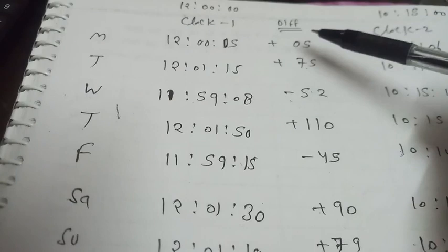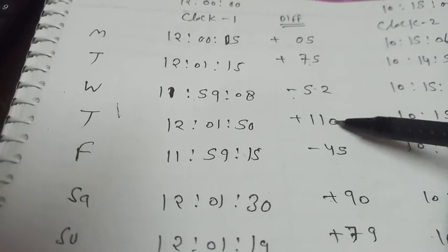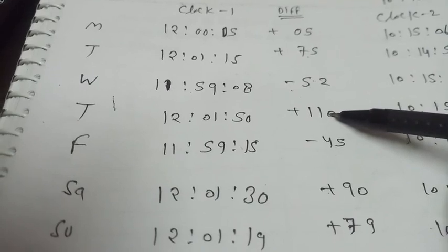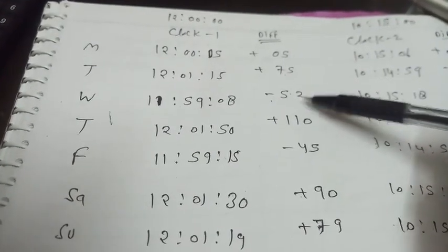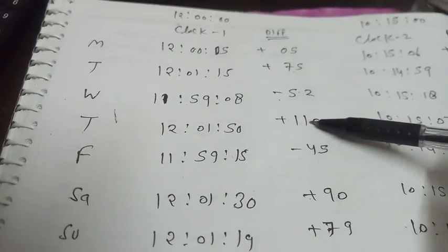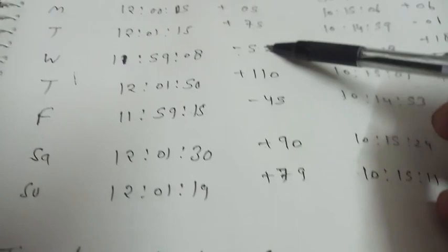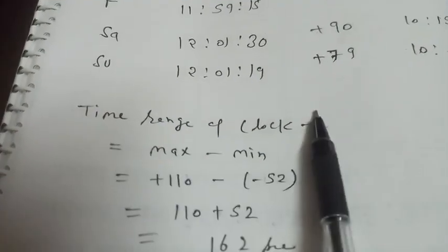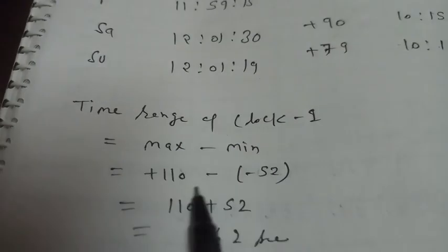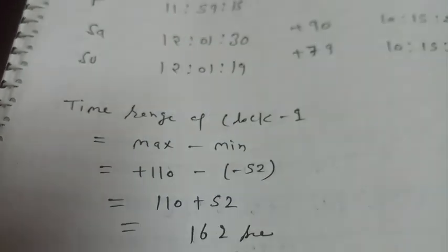The maximum positive error is 110 and the maximum negative error is minus 52. So time range we find for Clock 1: maximum minus minimum, 110 minus 50, so this is 162 seconds.